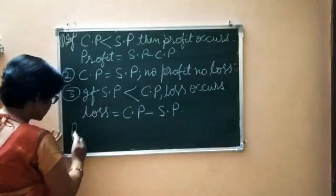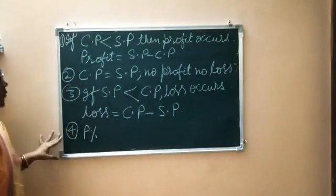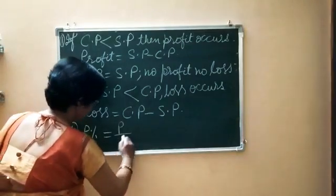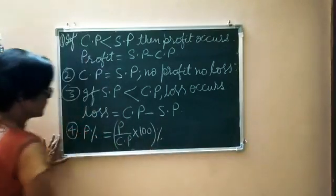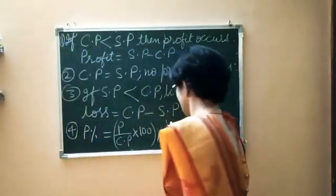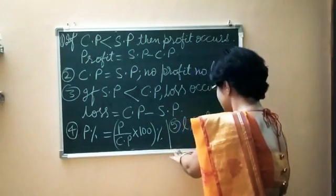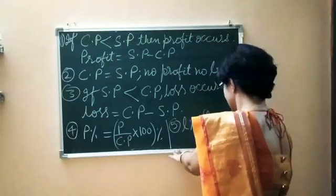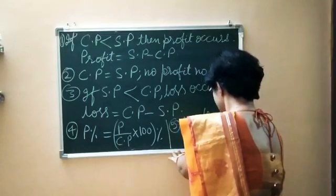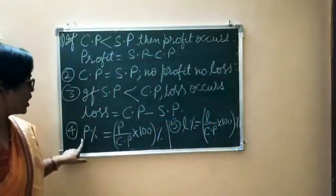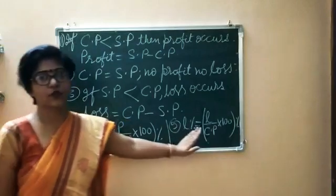Now we will see profit percentage and loss percentage. Profit percentage equals profit upon CP into 100%. Loss percentage equals loss upon CP into 100%. Both profit percent and loss percent are calculated on cost price.